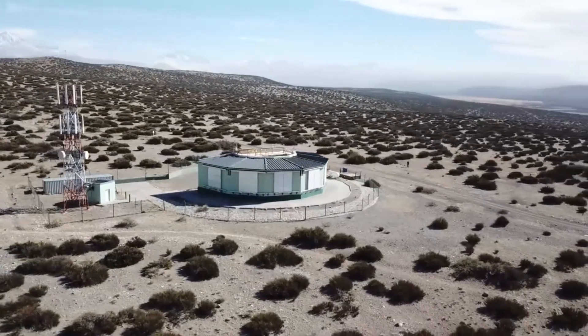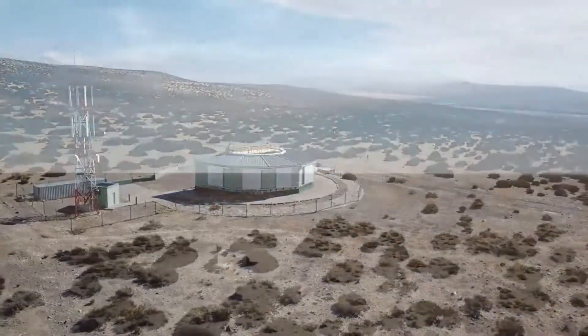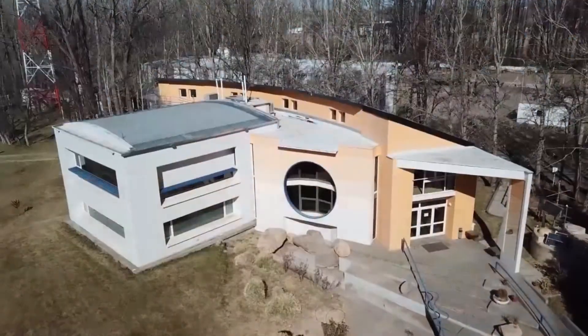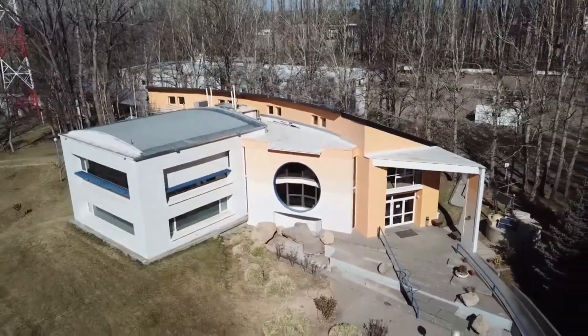Cosmic rays can be detected at the ground level by using large tanks of water scattered over a large area. An example of this is the Pierre Auger Observatory.